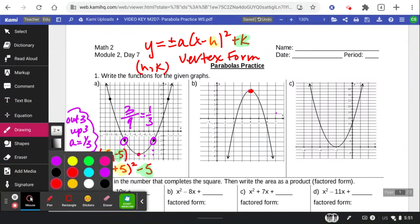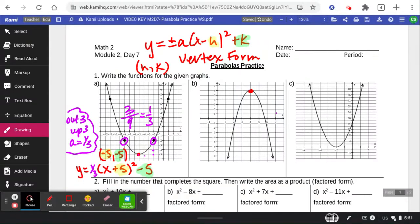Okay, this next one has a vertex of right 4, up 6. There's my h, k. This one's a downwards-facing parabola, so it's going to have a negative in the front of the entire equation. x minus 4 squared plus 6.